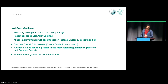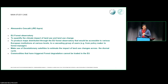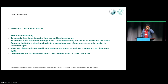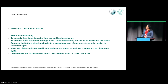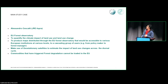Altitude has a huge impact on the analysis, so the idea is to consider altitude as a confounding factor and use regularized regression or other machine learning techniques to account for it. We also need to update and reorganize the documentation. For our main study case, we are working with Alessandra Schiscati at the JRC in Ispra, who is implementing the European Union Forest Observatory. The goal is to quantify the climate impact of land use and land cover changes, produce maps of Europe, and make use of new geostationary satellites to observe impacts through the diurnal cycle.